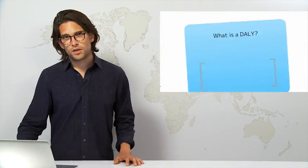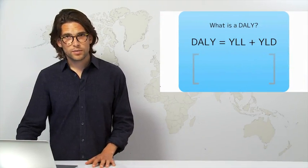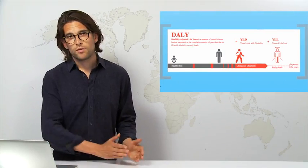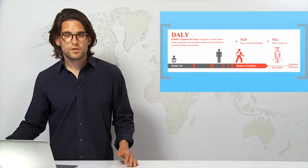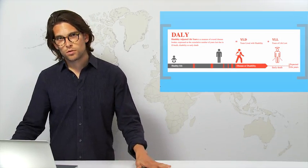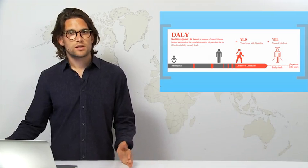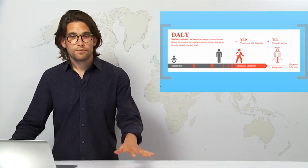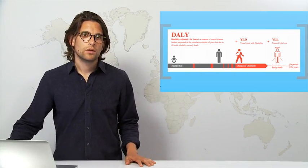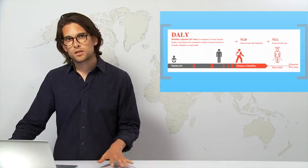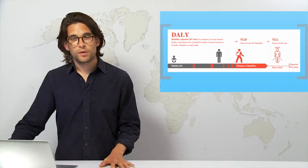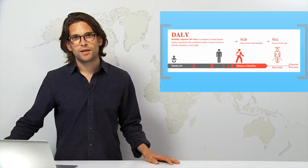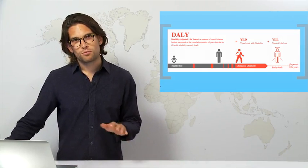Disability adjusted life years includes years of life lost plus years of life lost to disability. If someone dies earlier than expected based on global projections, we include those years that they lost to death. If they have times of disability or disease in their life, we use a fraction to work out how many years of life lost to disability that corresponds to. Those two combined give us disability adjusted life years.